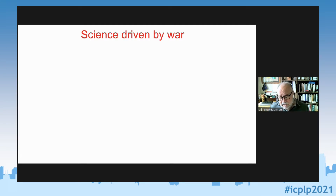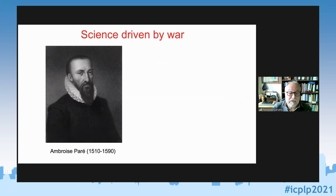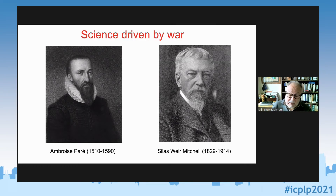Phantom limb is an interesting topic from the medical and scientific point of view because it has been driven by war. Most of the early studies and discussions about phantom limb and phantom limb pain come from surgeons — or barber surgeons as they used to be called — who were dealing with injured soldiers. The first one started documenting the sensations people were experiencing as a consequence of amputations. The main example is Silas Weir Mitchell in the second part of the 19th century, with his studies of soldiers wounded in the American Civil War, which created an entire new field of neuropathic pain.